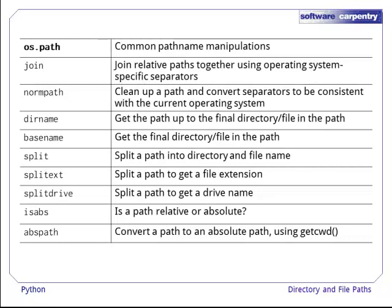In this episode, we saw a number of useful OSPath functions. Join can join relative paths together using the file separator of the current operating system. NormPath allows us to convert a path to be consistent with the current operating system, as well as cleaning it up and removing redundancy. Dirname can get the path to the final directory or file in a path. Basename can get the name of the final directory or file. Split combines dirname and basename. SplitExt allows us to get a file extension, and SplitDrive allows us to get a drive name. Finally, isabs allows us to see whether a path is relative or absolute, and abspath converts a relative path to an absolute one. Thank you for listening.